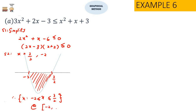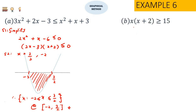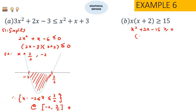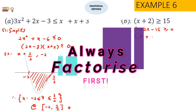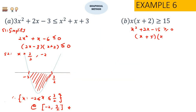You can also express the answer in interval form as the closed bracket from negative 2 up until 3 over 2. For the second example, always simplify first. You should have x squared plus 2x minus 15 greater than or equals to 0. Factorizing this, we get x plus 5 and x minus 3, so greater than or equals to 0.